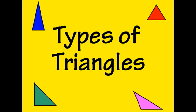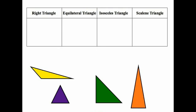In this video, we'll be learning about the different types of triangles. There are four different types of triangles we'll be working with: the right triangle, the equilateral triangle, the isosceles triangle, and the scalene triangle.